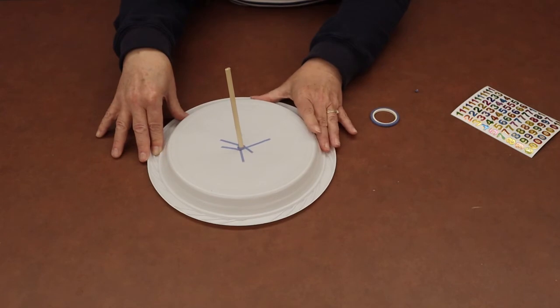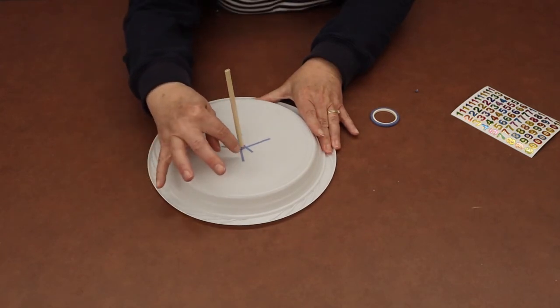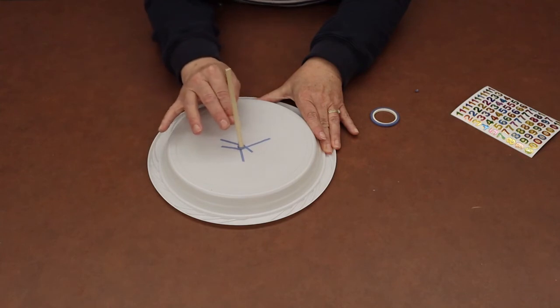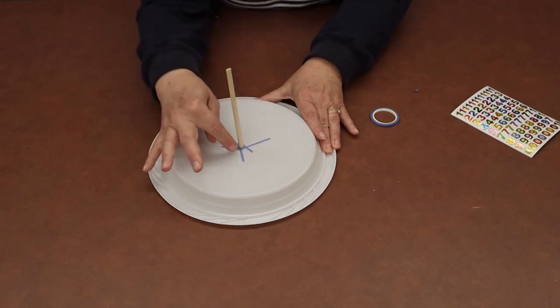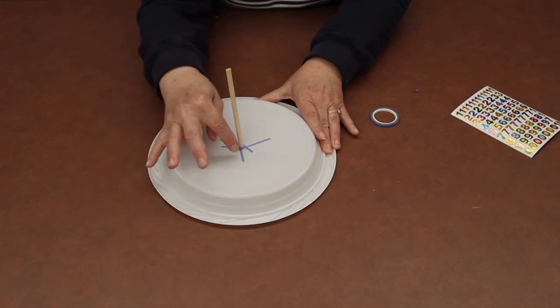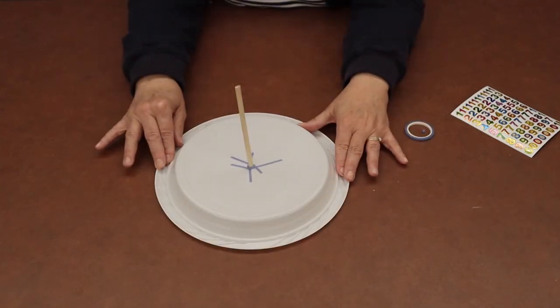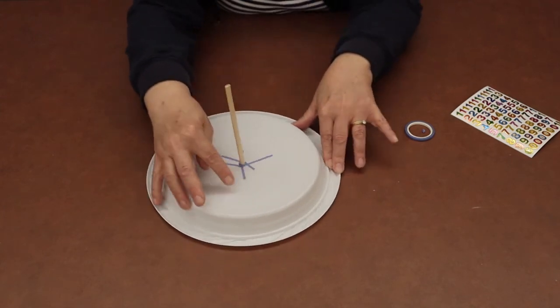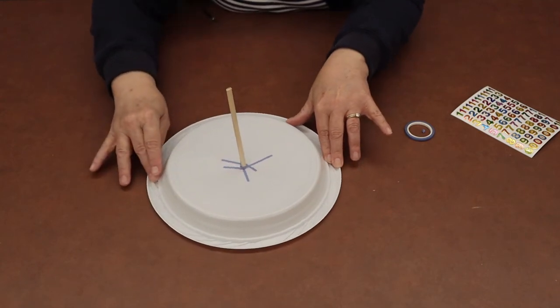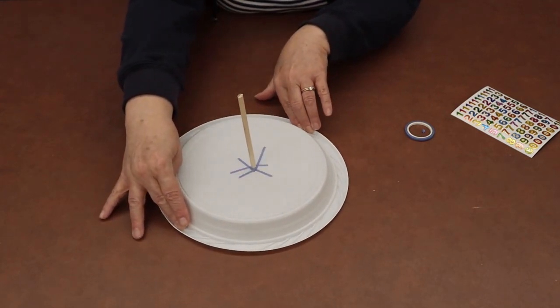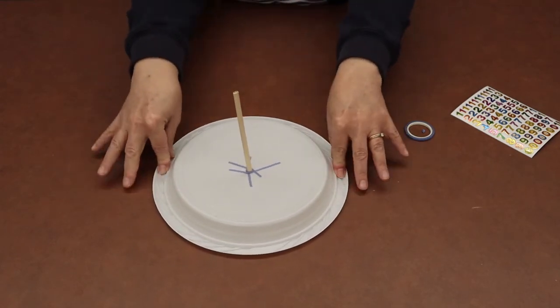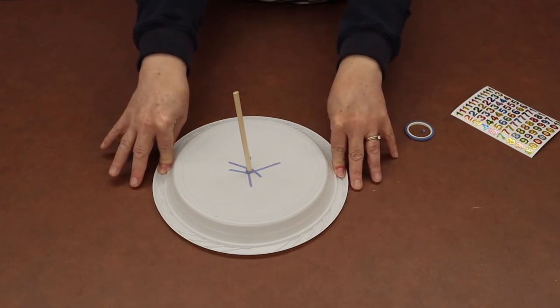So just for example, if you start at nine o'clock in the morning and you make your mark here, and you leave your plate in the same spot, secure it so that when you go out at 10 o'clock and you use the 10 o'clock shadow, if your plate were to twist, then your hour marks wouldn't be accurate. If you started here but then your plate twisted, you might have a very inaccurate mark between hours. So we want to make sure that we secure our plate so that we can make accurate marks on the hour.